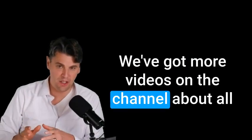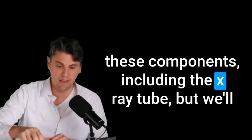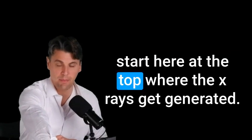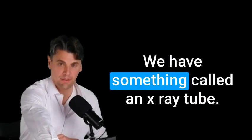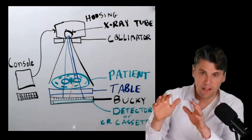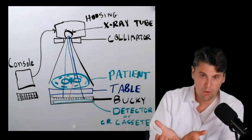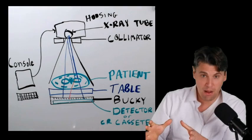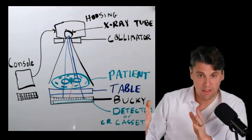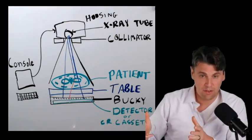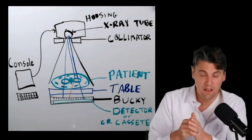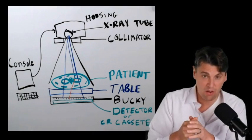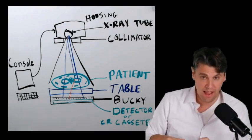We've got more videos on the channel about all these components including the x-ray tube but we'll start here at the top where the x-rays get generated. We have something called an x-ray tube. You have a glass housing or what we call a vacuum tube to remove the extra air molecules. The way we generate the x-rays in our x-ray tube is send electrons in, those electrons hit a heavy metal hard, and then out come x-rays.